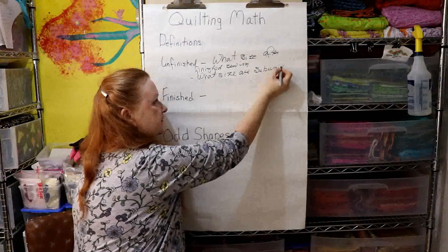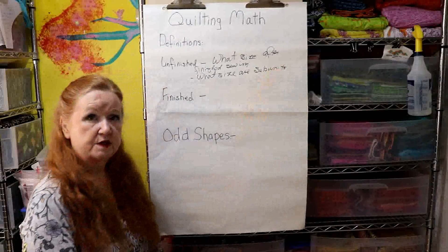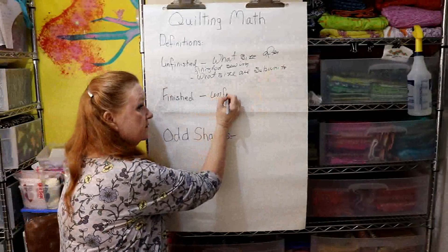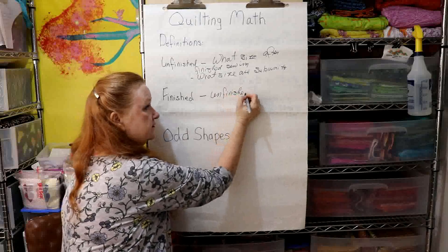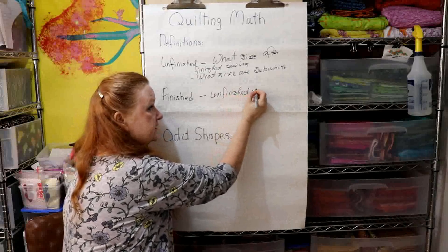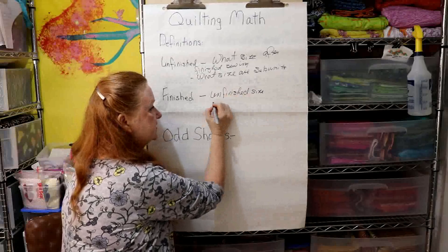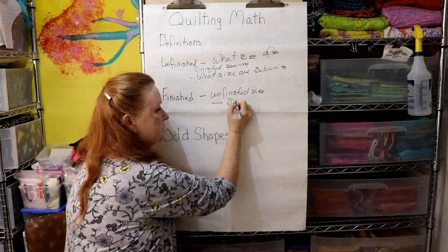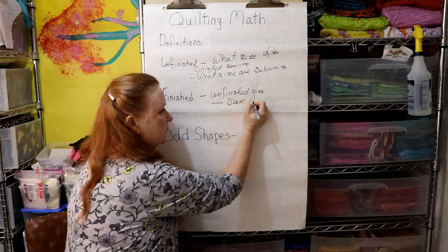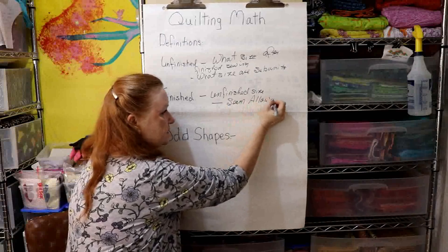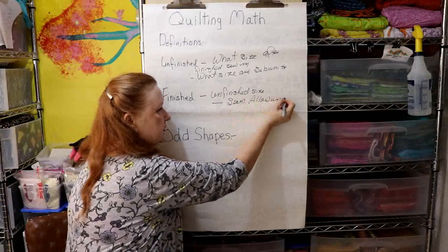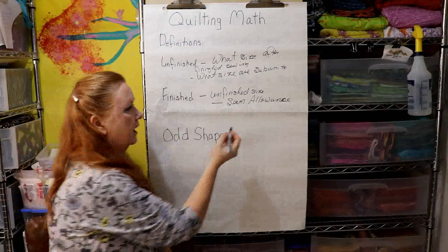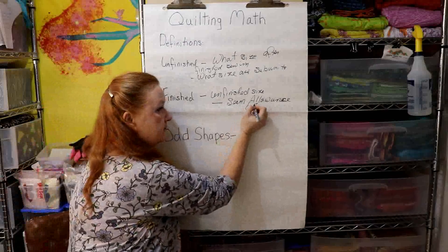The finished size is the unfinished size minus the seam allowance. In quilting that's usually a quarter inch on each side, so you're subtracting 0.5 of an inch total.